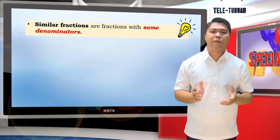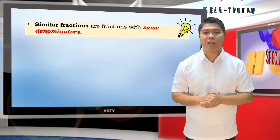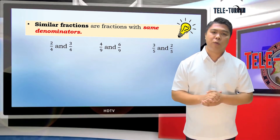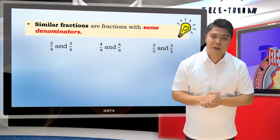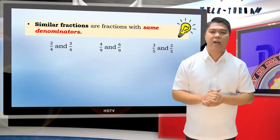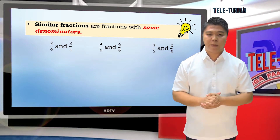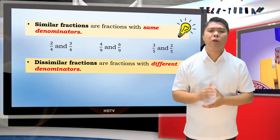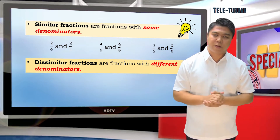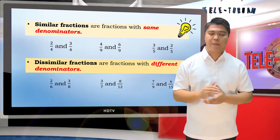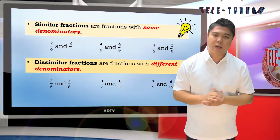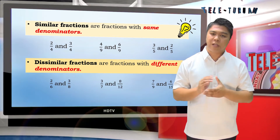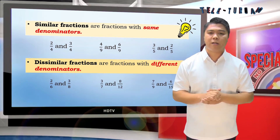Similar fractions are fractions with the same denominators. For example: 2 fourths and 3 fourths; 4 ninths and 6 ninths; 3 fifths and 2 fifths. Dissimilar fractions are fractions with different denominators. For example: 2 sixths and 3 eighths; 3 sevenths and 8 twelfths; 7 ninths and 6 fifths.